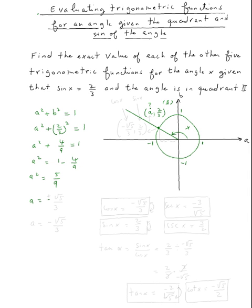This means a = ±√5/3, but since the angle is in quadrant two, a is on the left side, so a must be negative: a = −√5/3. So the point on the unit circle is (−√5/3, 2/3).